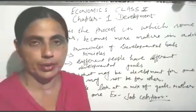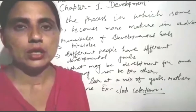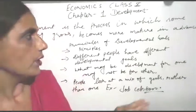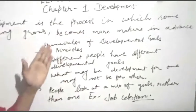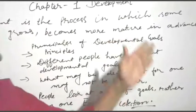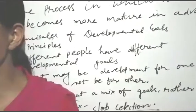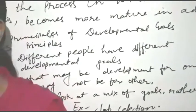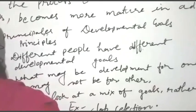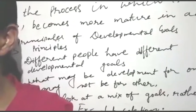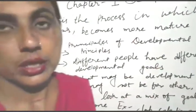Chapter number 1 is Development. Development is a very familiar word — it is the process in which something grows and becomes more mature. It is defined as growth. Some of the important goals people seek are: more income, equal treatment, freedom, security, respect from others, etc.